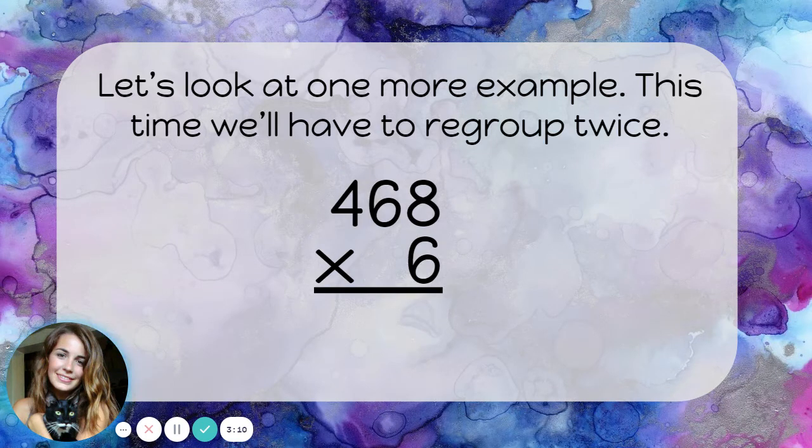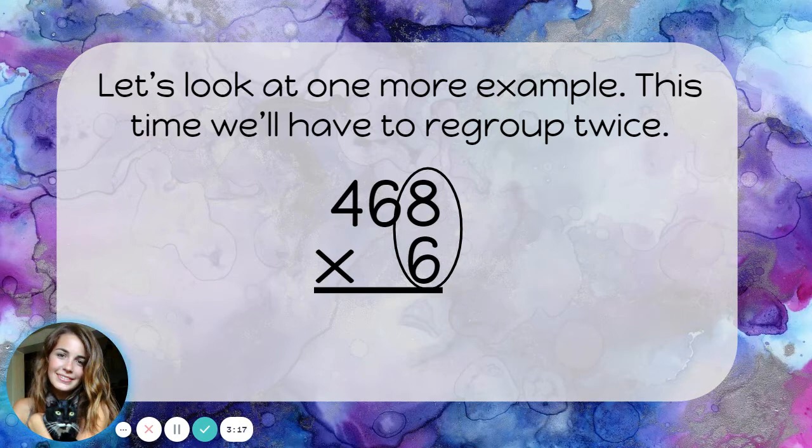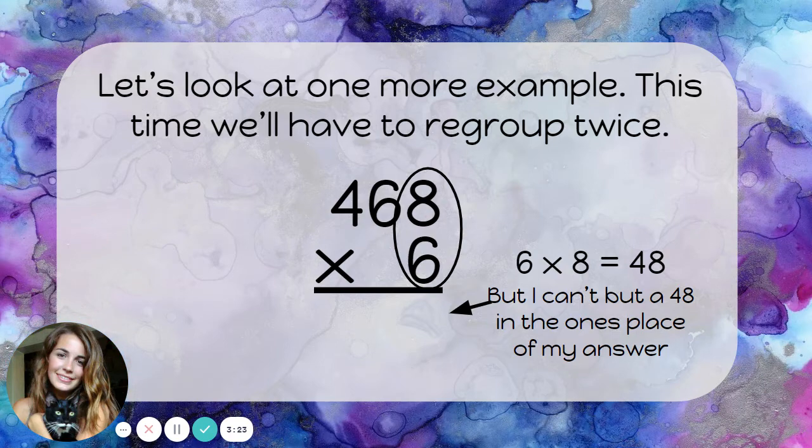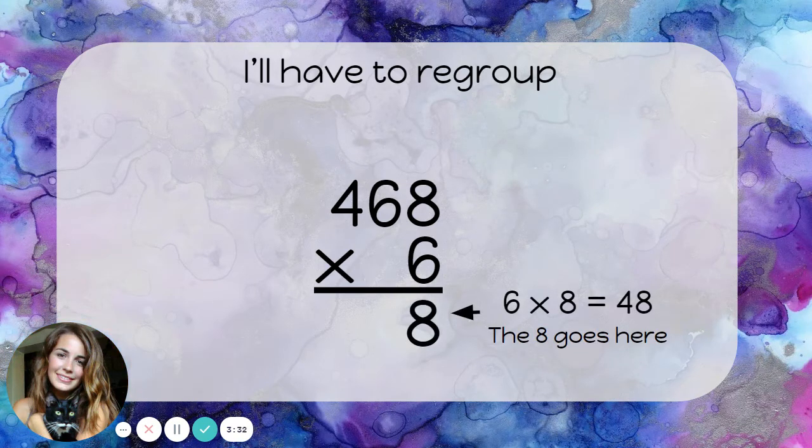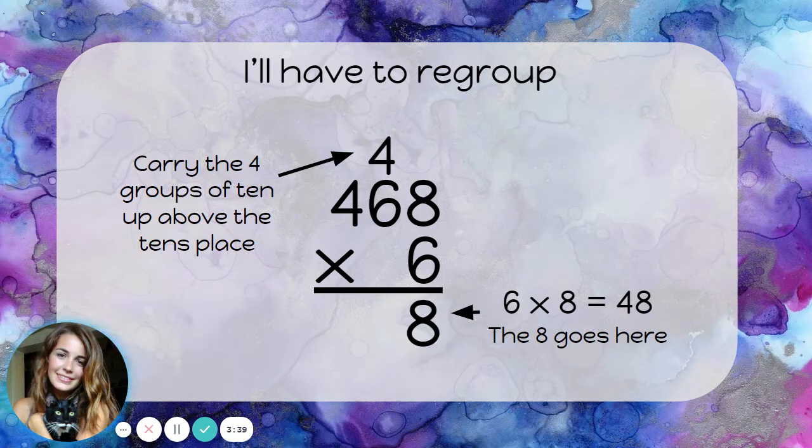Let's look at one more example. This time, we'll have to regroup twice. We're going to multiply the ones. 6 times 8 is 48. But I know by now that I can't put a 48 in the ones place of my answer. So, I'll put down the 8, and I'll carry that 4, which is really four groups of 10. I'll carry it up above the tens place, so that those four tens can be with the other tens in my problem.